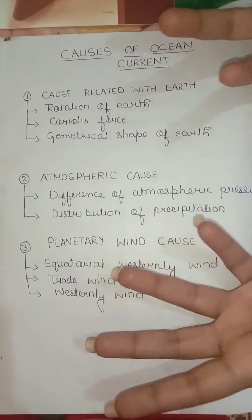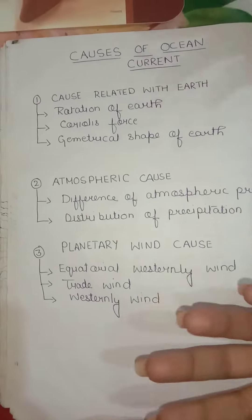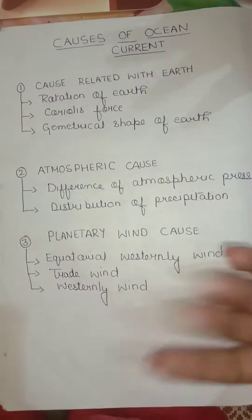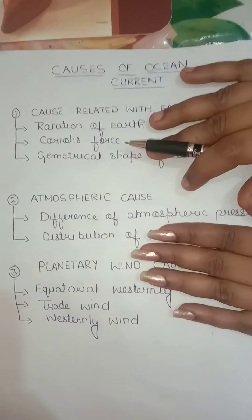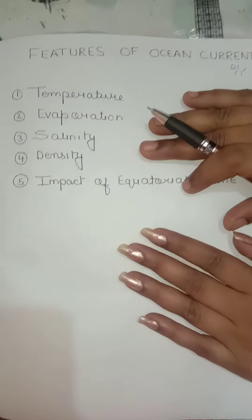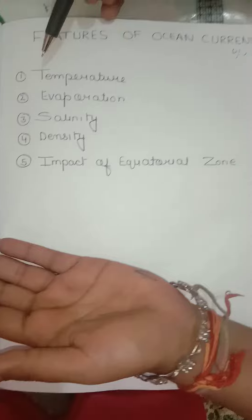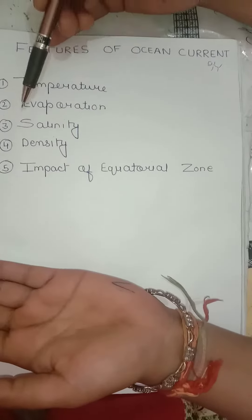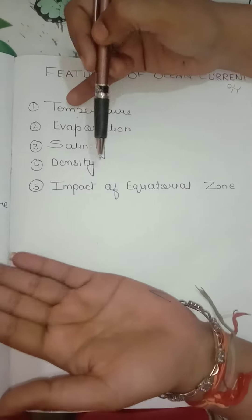The salinity of the water, temperature, and the Coriolis effect also have an effect on ocean currents, along with underwater earthquakes. Now, the features of ocean currents are: temperature, operation, salinity, density, and the impact of the equatorial zone.